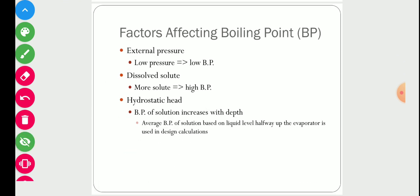The factors which affect boiling point are: first, external pressure — if pressure is low, the boiling point will be low. So if we have heat-sensitive material, we create vacuum inside the evaporator to decrease its boiling point. For example, if a solute degrades at 100°C, we apply vacuum so that evaporation takes place at say 90°C at a lower pressure. By changing pressure, we can change the boiling point of the solution.